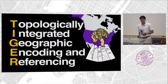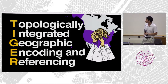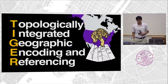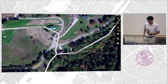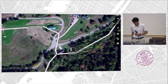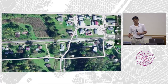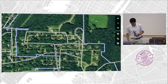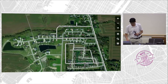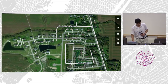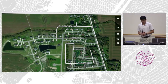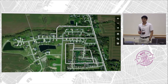TIGER, like a lot of government things, is an acronym. It stands for Topologically Integrated Geographic Encoding and Referencing. And despite all those fancy words, it has some issues. There are lost pavement roads that aren't actually on pavement, offset issues, neighborhoods that don't look like they're supposed to in real life, disconnected ways, and roads that exist in TIGER but not in the real world and vice versa.